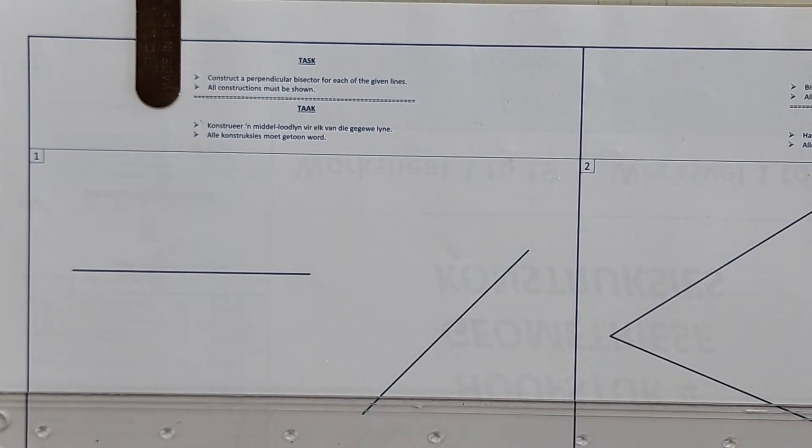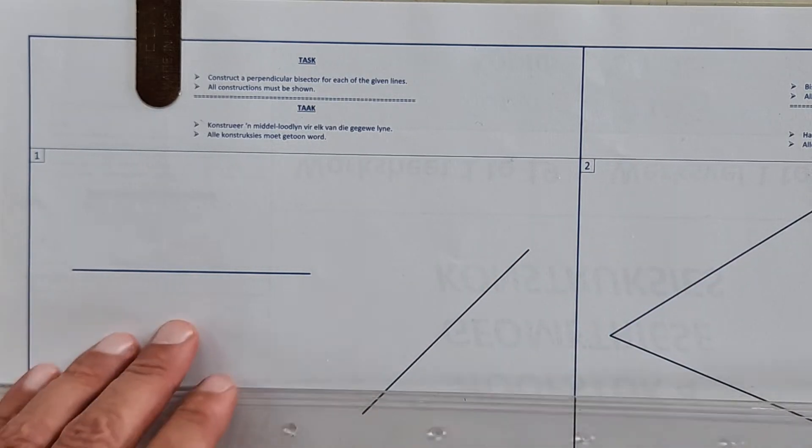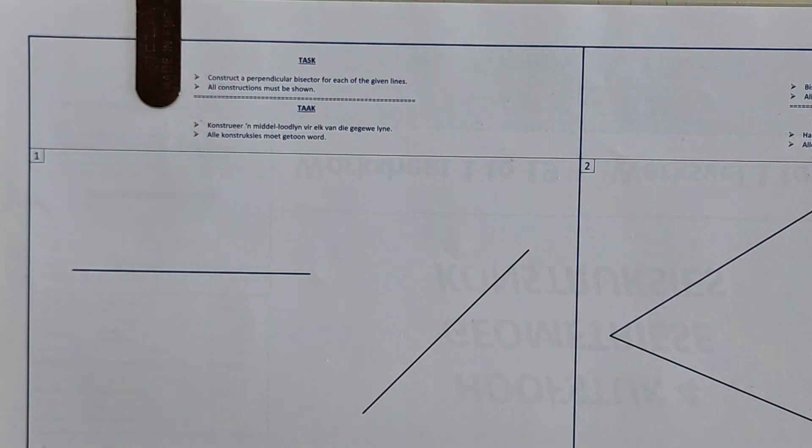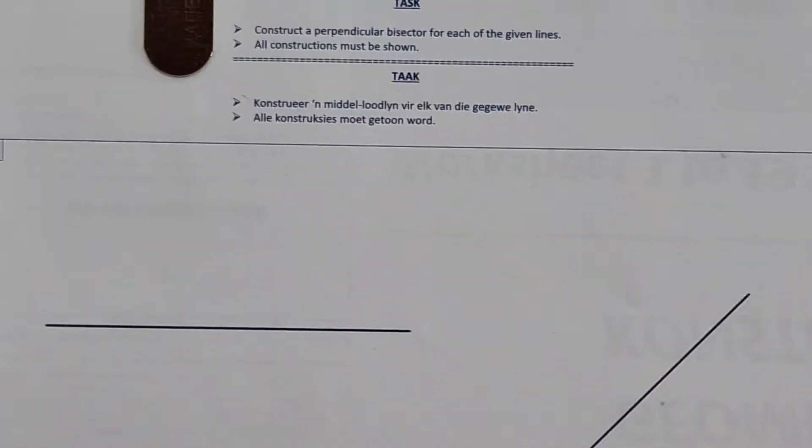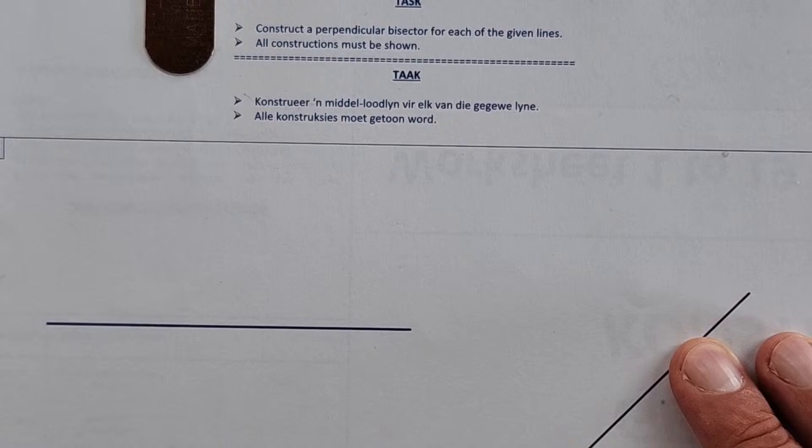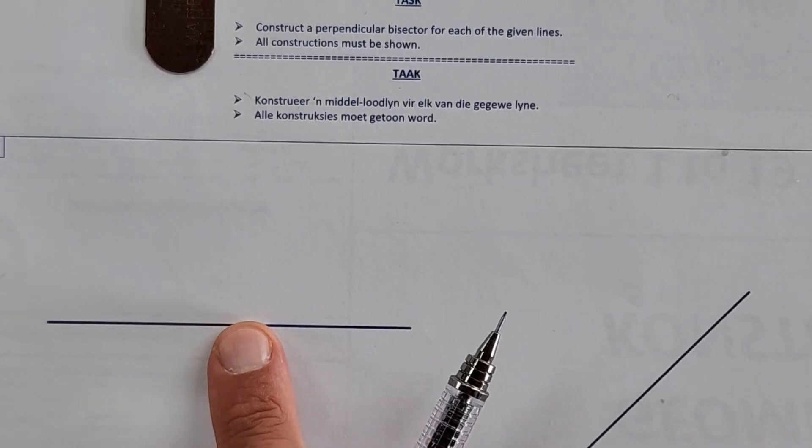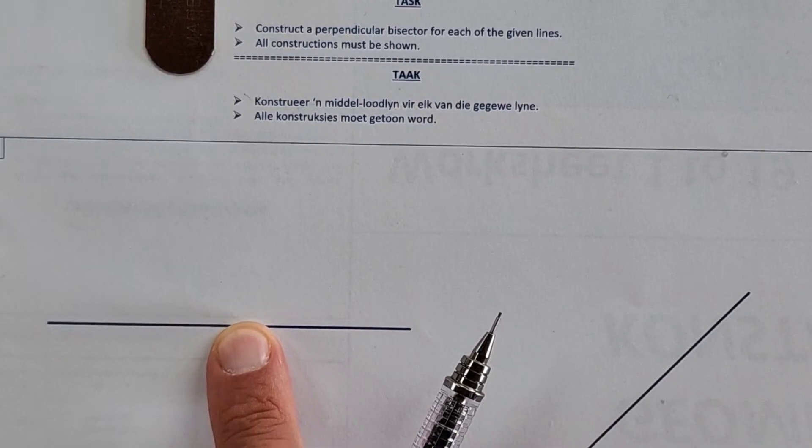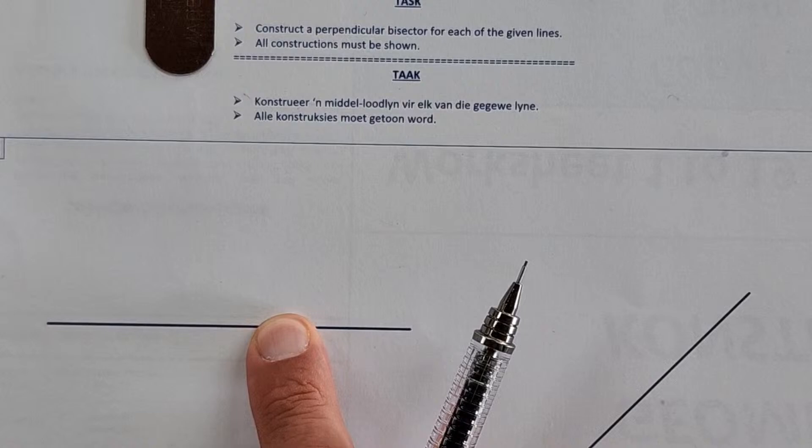Of course, we're going to start you off right here at the very beginning, very simple, with things that you might have done in technology or even some of you in mathematics. So let's get started. So on page 4.1 of the HSE workbook, I'm going to zoom in so that you really see what we are talking about. They're giving us different line segments and they're asking us to construct a perpendicular bisector for each of the given lines.